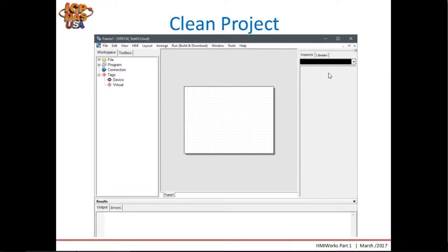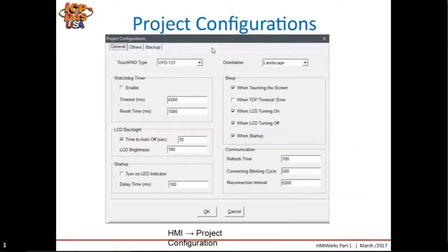You will then get a clean project with, at the left, the workspace and the toolbox. In this example, we will be working mostly with the toolbox. At the right side of the screen, we have the inspector and libraries. We will be working with the inspector that will show the properties of the selected item at the middle of the screen. This can be the white frame itself, or any widget or object placed on or next to the frame. We will also check some of the menu items at the top of the screen.